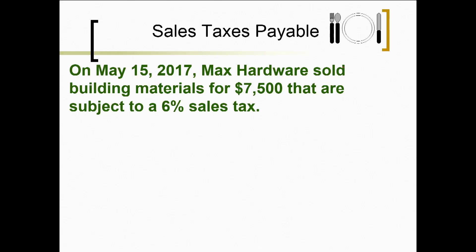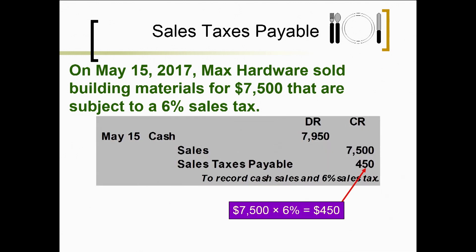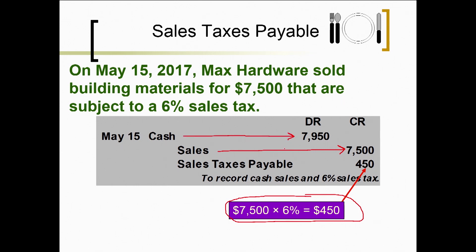Let's look at the slide. On May 15th, Max Hardware sold building materials for $7,500 subject to a 6% sales tax. What's the journal entry? We book the sale at $7,500, but we don't just receive cash of $7,500 — we're going to receive an additional $450, which is 6% times the sale amount. So as the retailer we actually receive $7,950. But $450 of that is not ours — we have to set up a liability for that $450 and pay it to the government. When you eventually pay it, you credit cash and debit the liability.